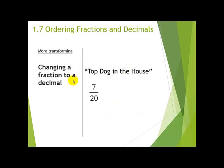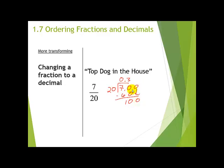One of the things we're going to do in this section is change a fraction to a decimal. A fraction is a division, so you take your numerator and divide by your denominator. For 7 over 20 — since it's a proper fraction, I know it's going to be less than 1. Working through the division, I get a terminating decimal: 7/20 is equal to 0.35, or 35 hundredths.